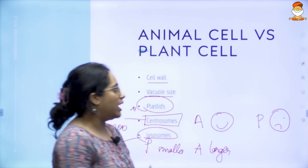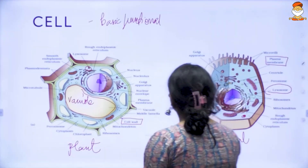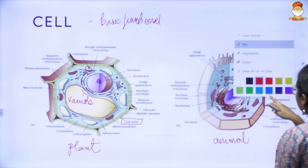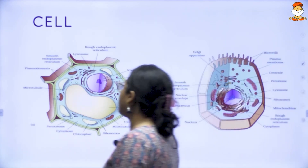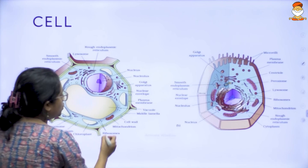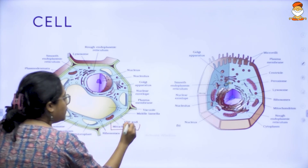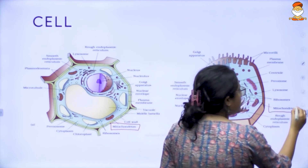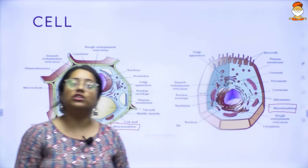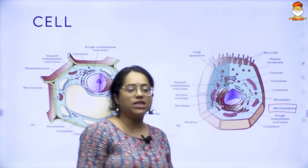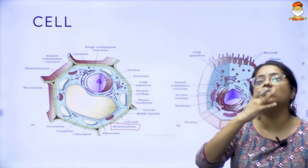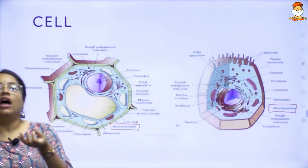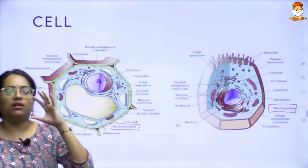Apart from that, both plant and animal cells have certain common, very important features. There is something called mitochondria — a very important feature. Both your plant cell and your animal cell have mitochondria. Mitochondria is important because it is the organelle where what happens is — we eat food, it goes through the digestive tract, and after a point it gets digested.